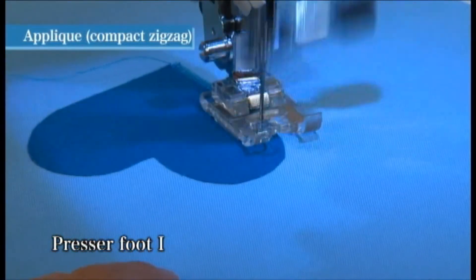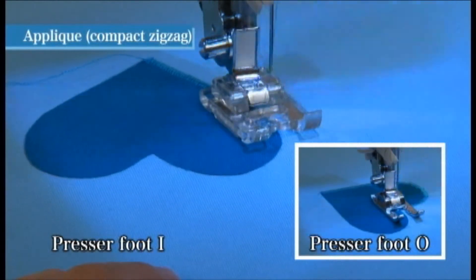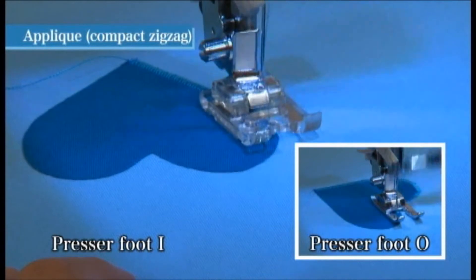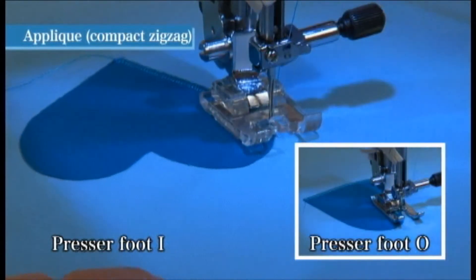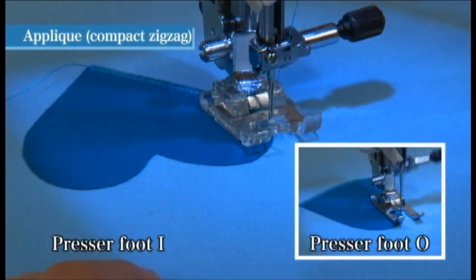When sewing around sharp angles of an applique, raise the presser foot while the needle is sunk in the fabric outside the applique and continue slowly while changing the sewing direction. This will ensure a continuous line with no spacing between stitches.